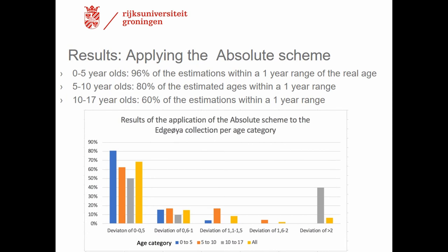Applying the absolute scheme to the Etzea collection, it scored very well for the two youngest age groups (0–5 and 5–10 years old) and also well for the oldest age group (10–17 years old). For the youngest age group, 96% of estimations were within a one-year range of the real age; for the middle age group, 80% were within a one-year range; and for the oldest age group, about 60% of estimations were within a one-year range.